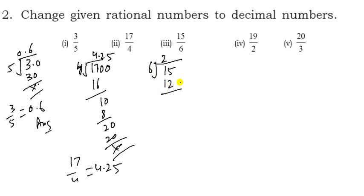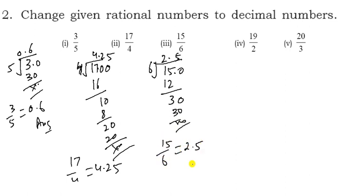For 15 upon 6: dividing 15 by 6, we get 2 with remainder 3. Place decimal, bring down 0. Five 6s are 30, so it cancels out. Therefore 15 upon 6 = 2.5.